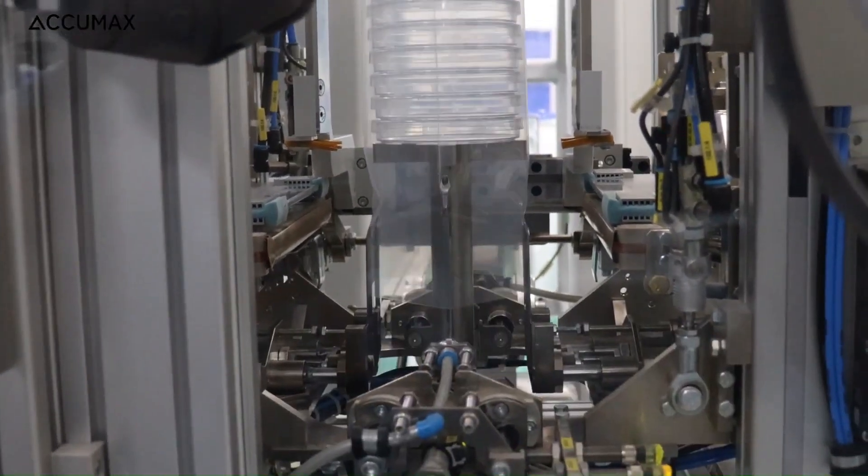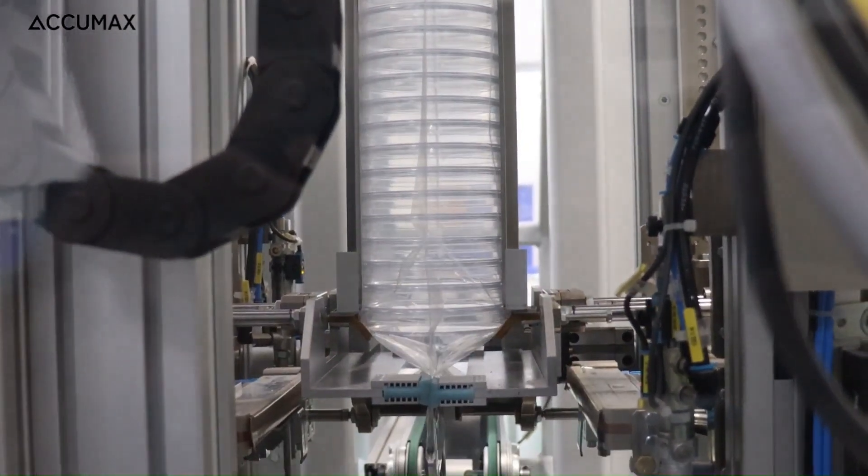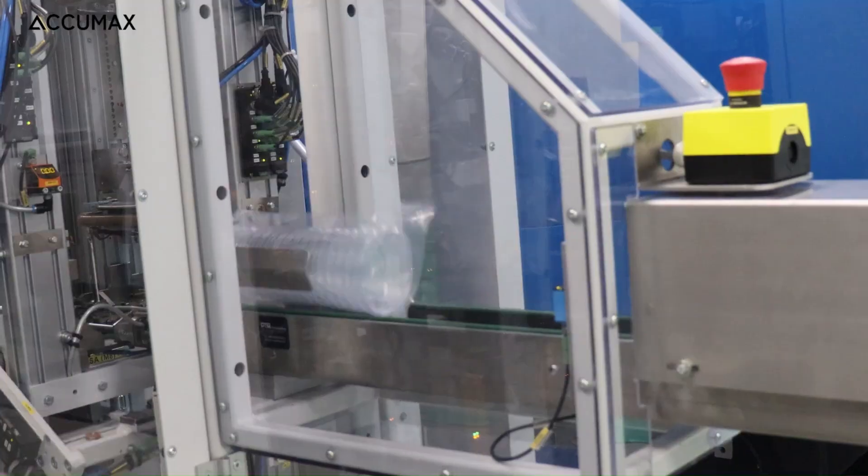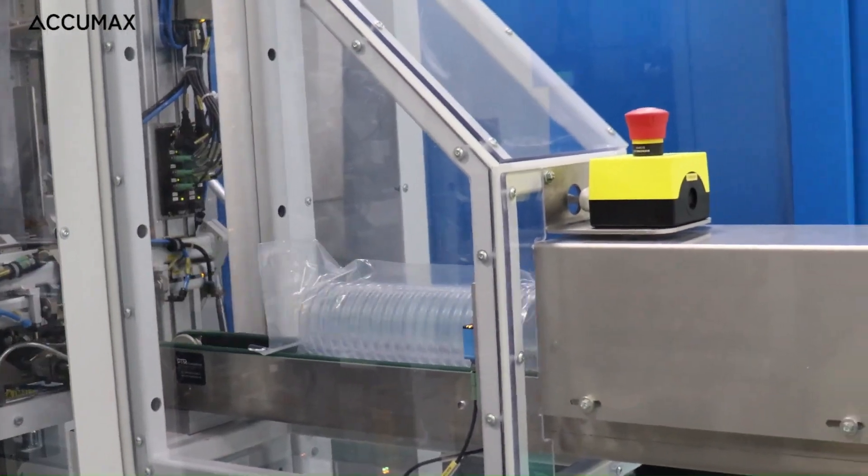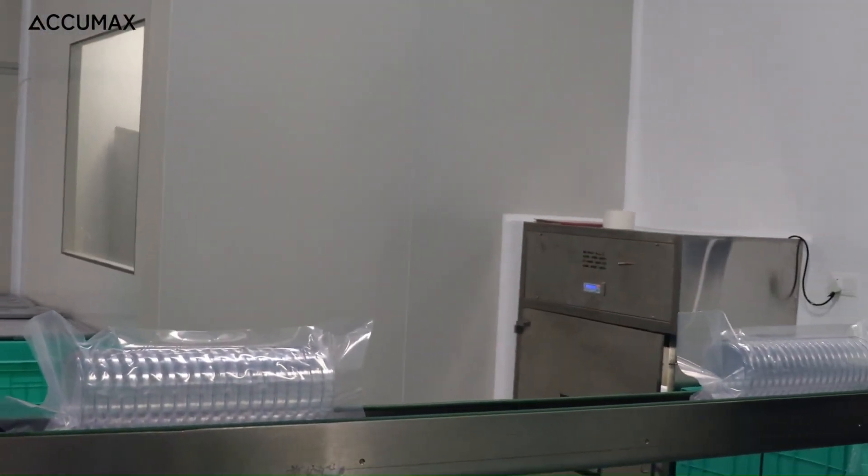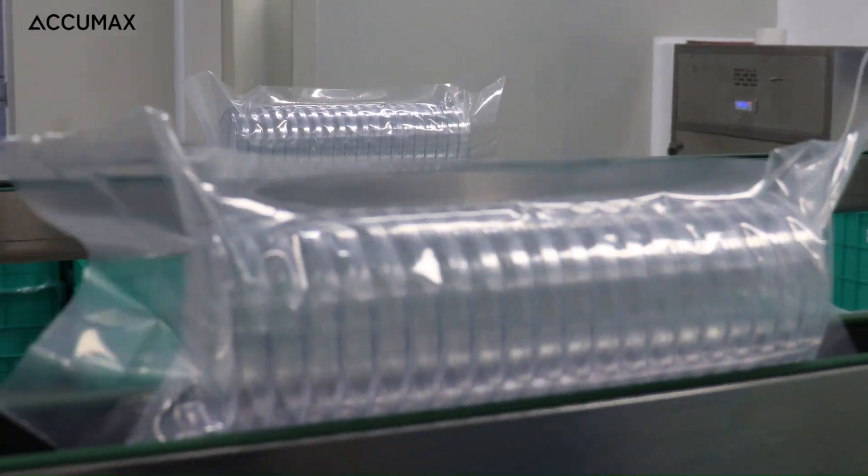Manufactured and packed in fully automated class 10k clean rooms from USFDA 21 CFR compliant polystyrene, Accumax petri plates are available in 90 mm diameter with vented and non-vented variants.